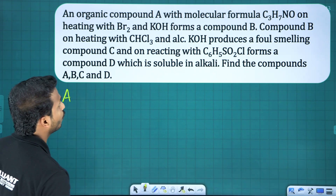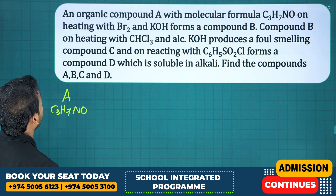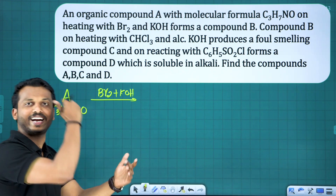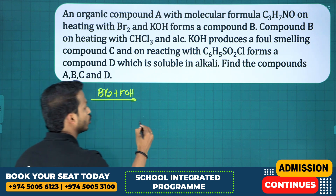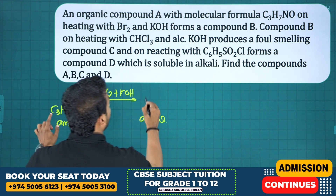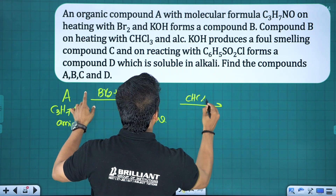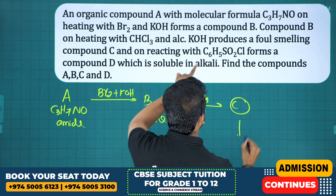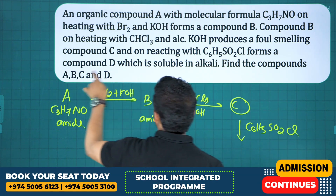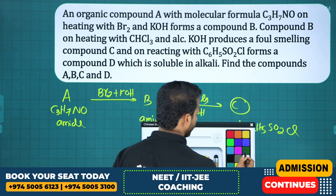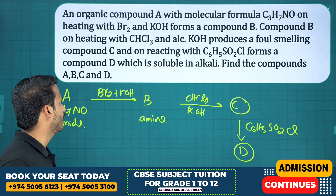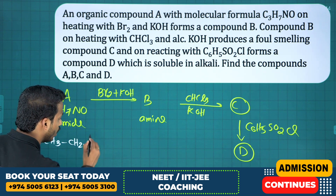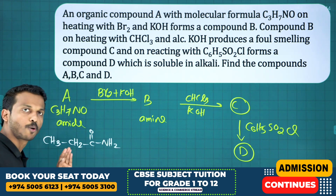An organic compound A with formula C3H7NO on heating with bromine and KOH (Hofmann bromamide degradation) — A must be an amide and the product B is an amine. Compound B on heating with chloroform and KOH gives a false smell (compound C). Compound C on reaction with C6H5SO2Cl forms compound D, which is soluble in alkali. The three-carbon amide is propanamide: CH3CH2CONH2.